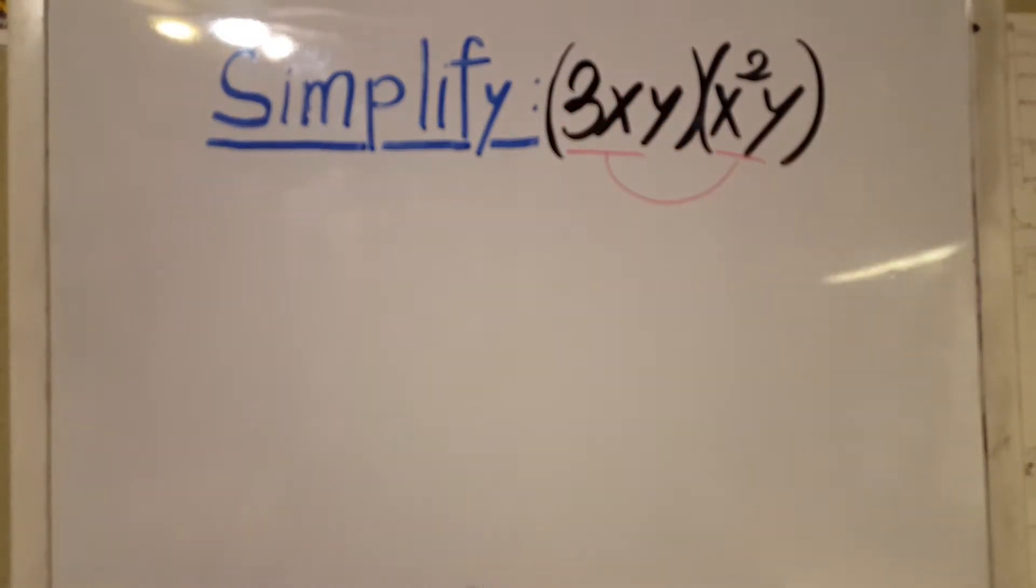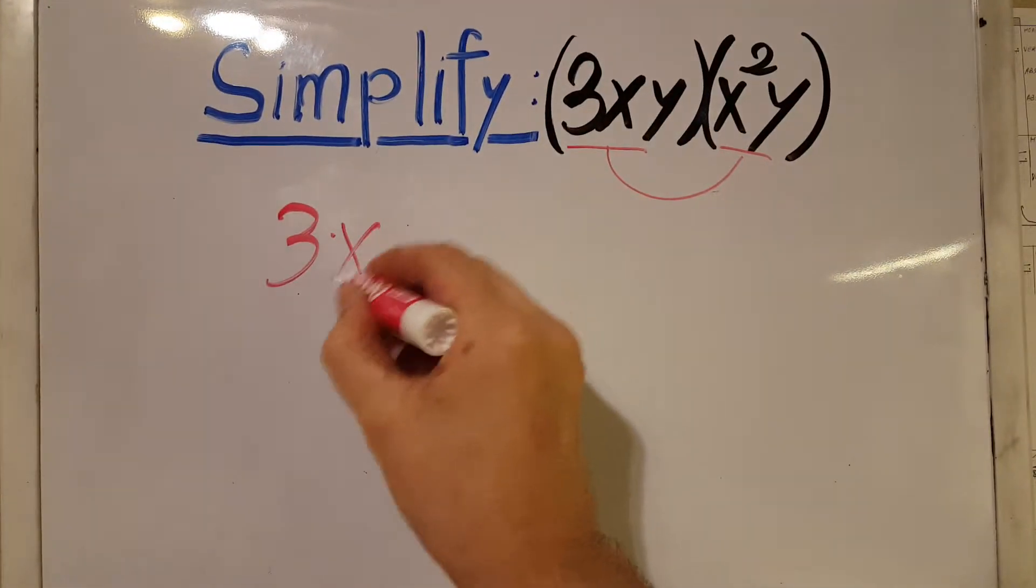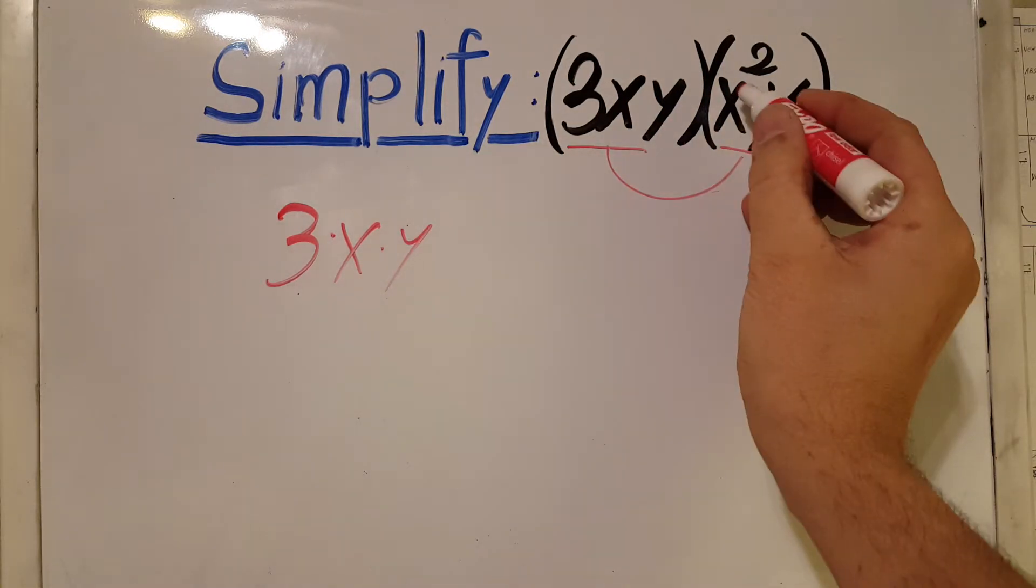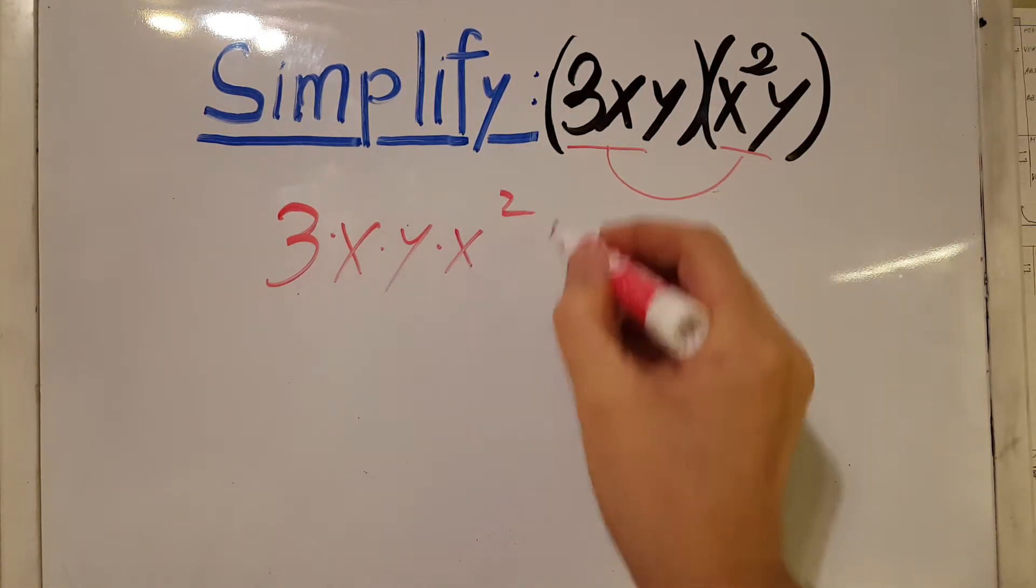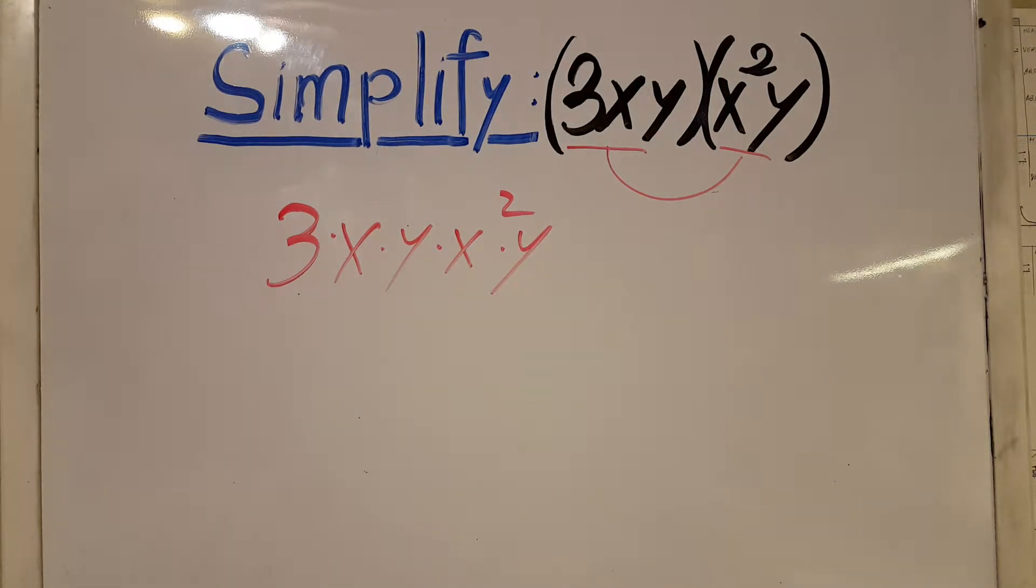So we're going to rewrite the whole thing without parentheses. We're going to have 3 times x times y times x squared times y. Now we're going to go ahead and use the commutative property.